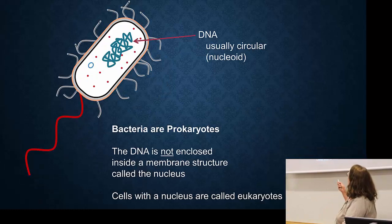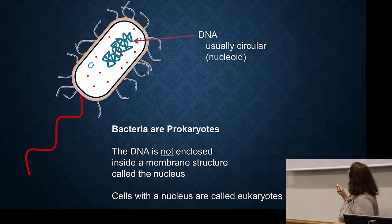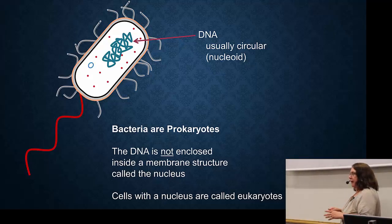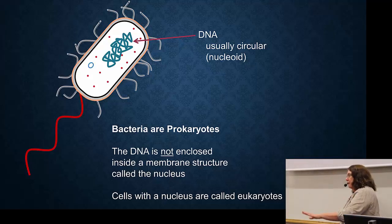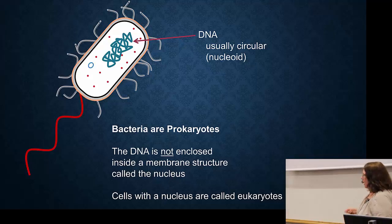You also have DNA, shown here. DNA in the case of bacteria is not in a nucleus. Bacteria are prokaryotes, meaning the DNA is not enclosed by a membrane. In your cells and in plant cells, you've got another membrane surrounding the DNA — this is not true in bacteria. Cells with a nucleus are called eukaryotes.